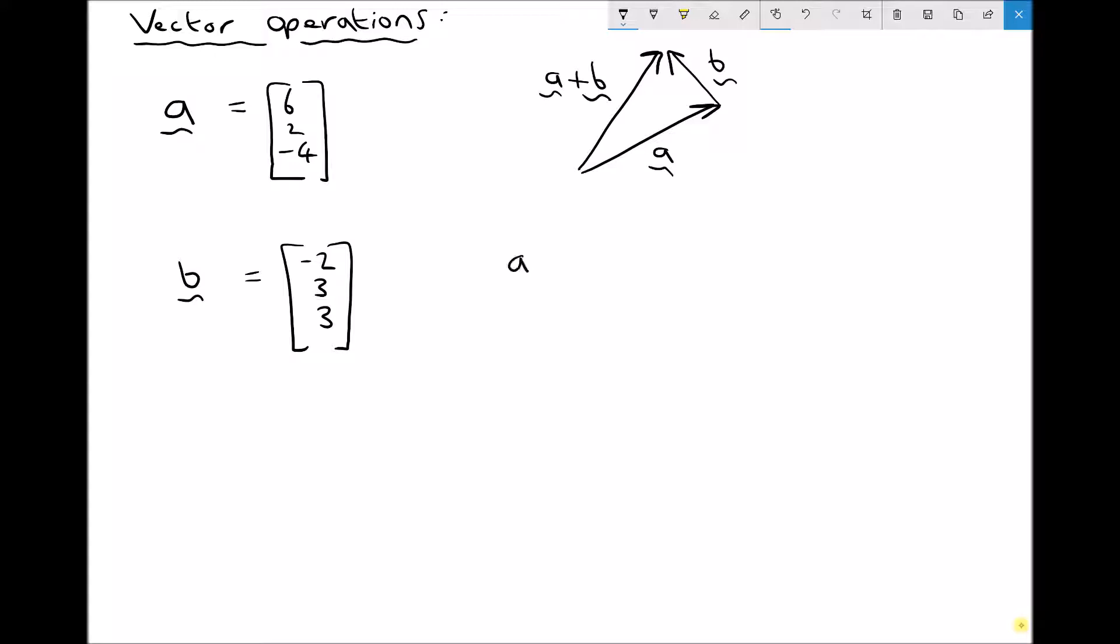So the vector A plus B equals our A vector, 6, 2, minus 4, plus our B vector, minus 2, 3, 3.